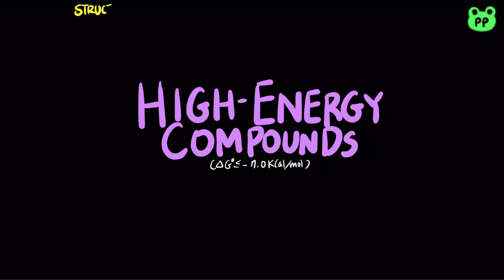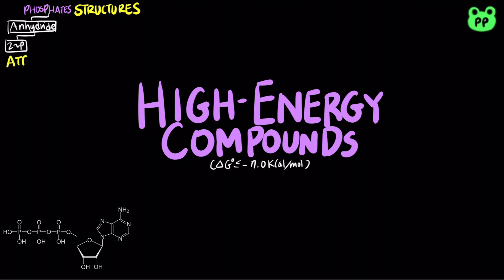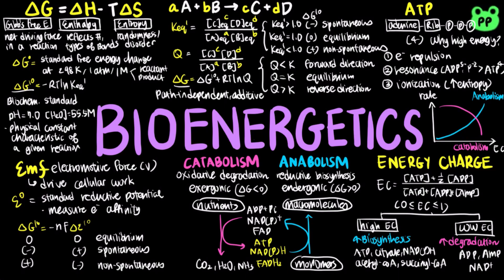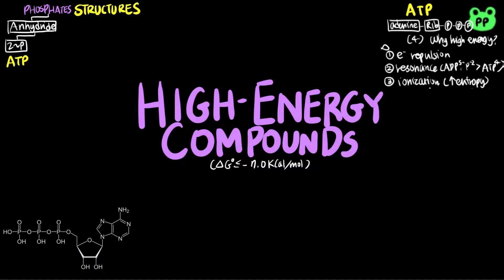Most high energy compounds contain phosphates group, including phosphoric anhydride. Phosphoric anhydrides with two high energy phosphate bonds include adenosine triphosphate or ATP, which is the energy currency between catabolism and anabolism. In my previous video titled Bioenergetics, I covered the three factors that make ATP a high energy compound.